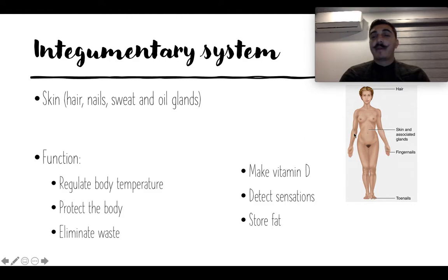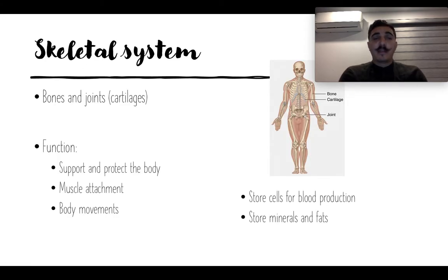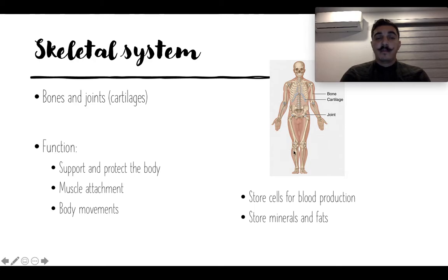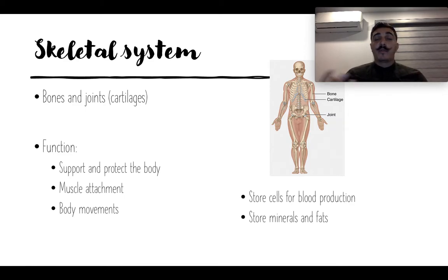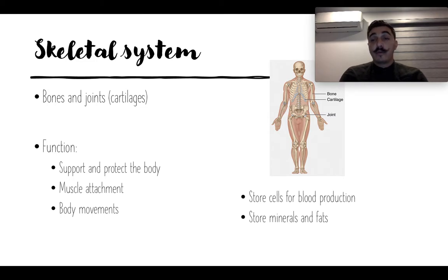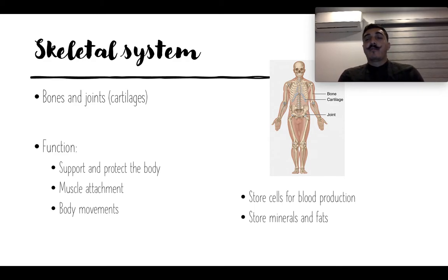There's a picture of every single one of those systems, also in your textbook. The skeletal system is basically the bones, joints, and cartilages. Their main function is to support and protect our body. Muscles attach and connect to bones enabling body movements. Bones also store cells for blood production and minerals and fat — that's the bone marrow.